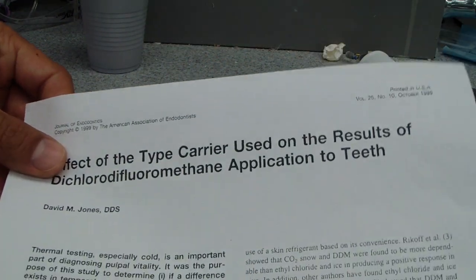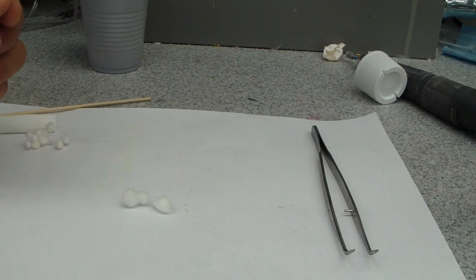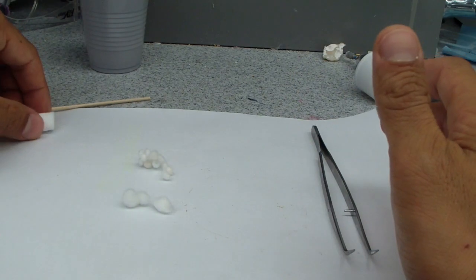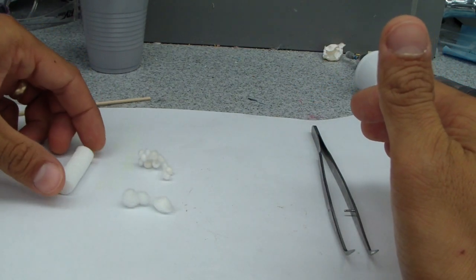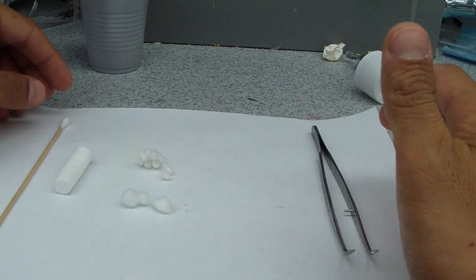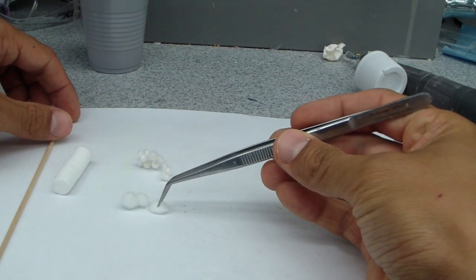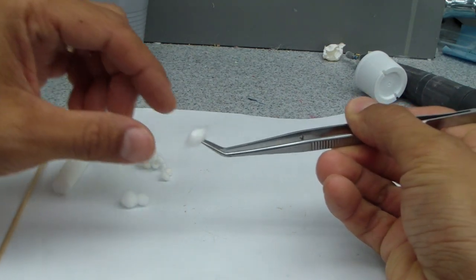In any event, I'm not sure it plays a huge significant difference, but what he did in that study was he took a mandibular incisor and placed a thermal probe through the apex and then measured the temperature difference. What he found was that the large cotton pellet, number four.